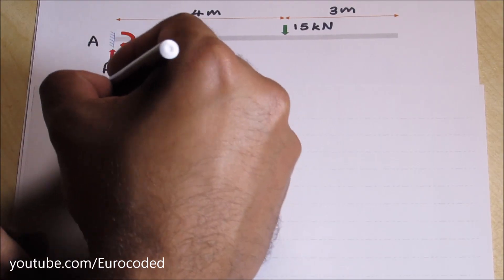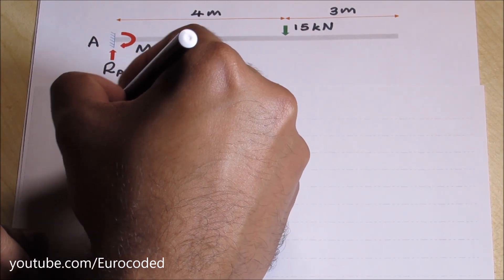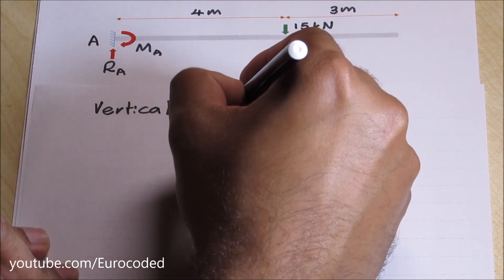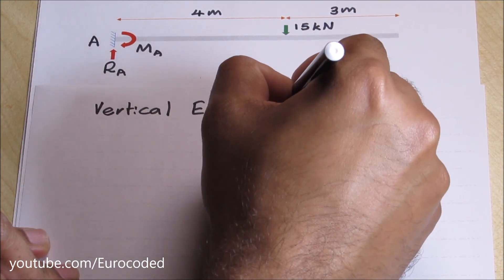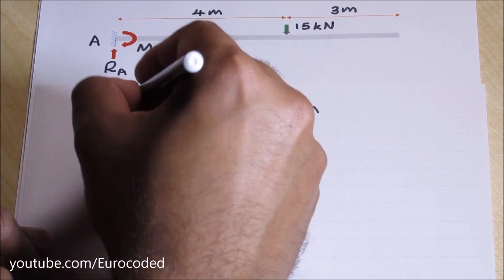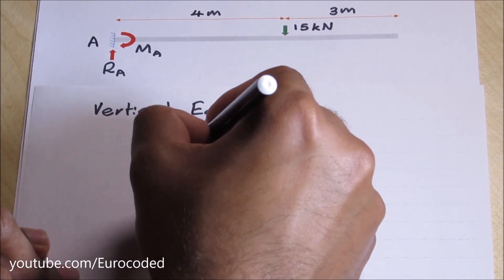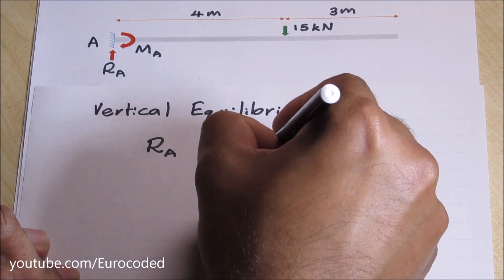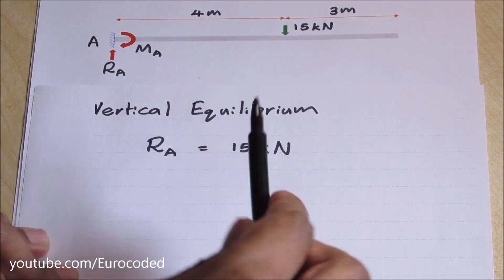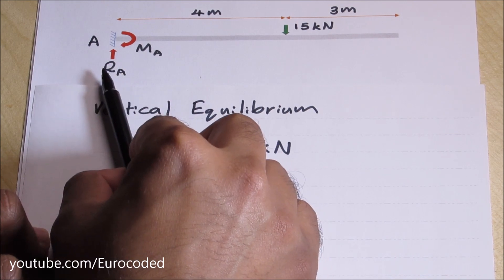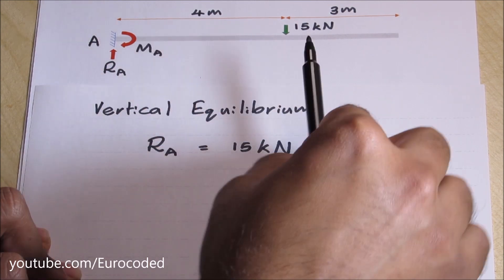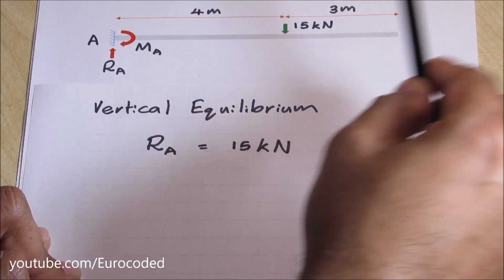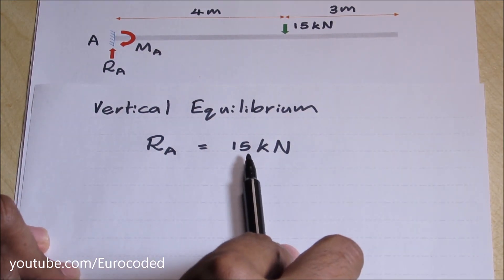For vertical equilibrium we can write RA is equal to 15 kN. We have one vertical reaction which is RA here and we have one vertical load applied which is 15 kN. So RA is equal to 15 kN.